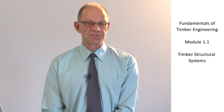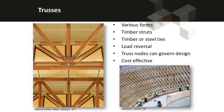Trusses make use of triangulation to transfer loads within a structure. The loads are transferred by tension and compression within the members, which tend to be a lot smaller than the members we saw in the portal frames. A key part of trusses is the connections between the members, where we are transferring load from one member into a node and then into its adjoining members. Trusses can be used architecturally, as the left photos show, or they can be used in a hidden application, as the right-hand photo shows.